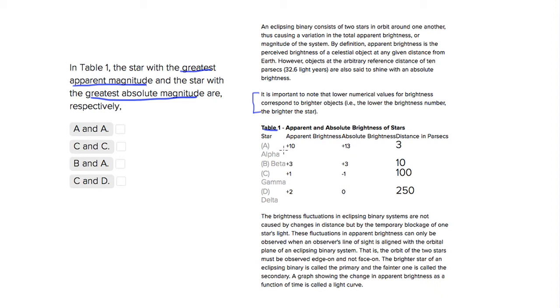We want to look and see what our lowest values are. For apparent brightness, our lowest value is plus one, which is c. So we know that the greatest apparent magnitude is c. We want c and question mark. Let's go through our answer choices and eliminate anything that doesn't mention c first.